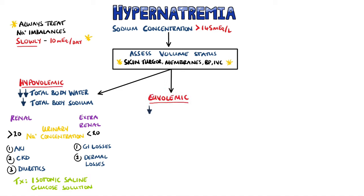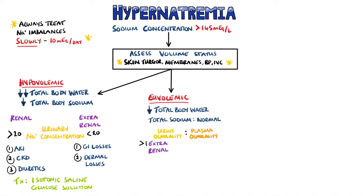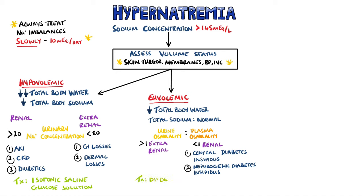Euvolemic patients have a slightly decreased total body water, but their sodium content is normal. Once again, this causes the concentration of sodium to rise. At this point, we would check the urine osmolality to plasma osmolality ratio. If it is above 1, indicating the urine is more concentrated than the plasma, then we may conclude that we have an extra-renal cause. If, however, the ratio is less than 1, then it may be renal in nature, and we would likely then be looking at central or nephrogenic diabetes insipidus, which are distinguished from each other by giving desmopressin, an antidiuretic hormone analogue. Treatment involves treating diabetes insipidus either by giving desmopressin in the central form, or by giving thiazide diuretics as they excrete more water than sodium, as well as salt restriction in the nephrogenic form. Hypotonic saline may also be used in euvolemic hypernatremia patients.